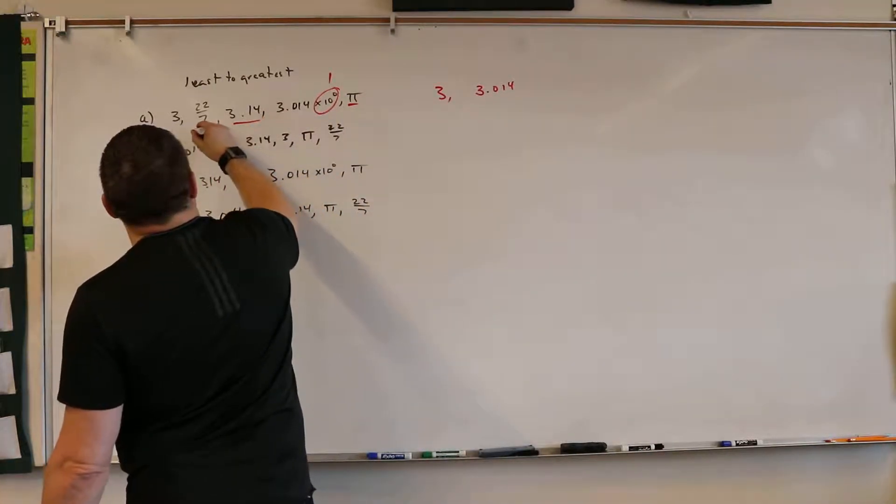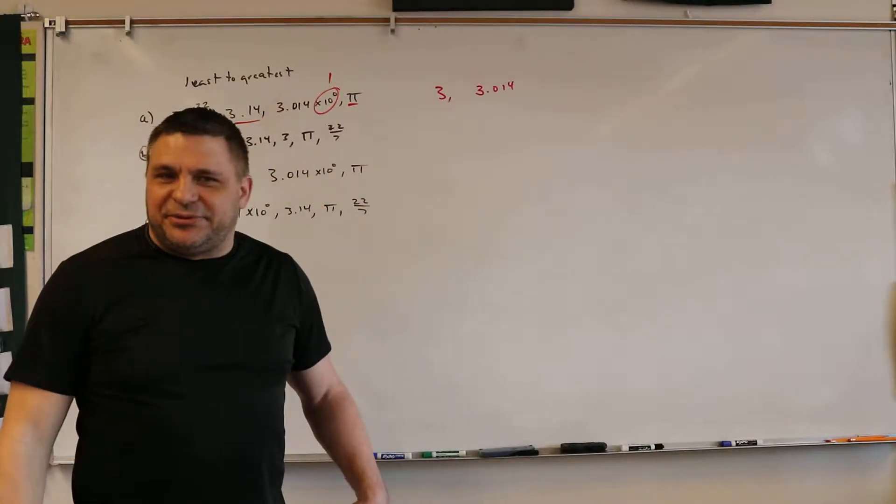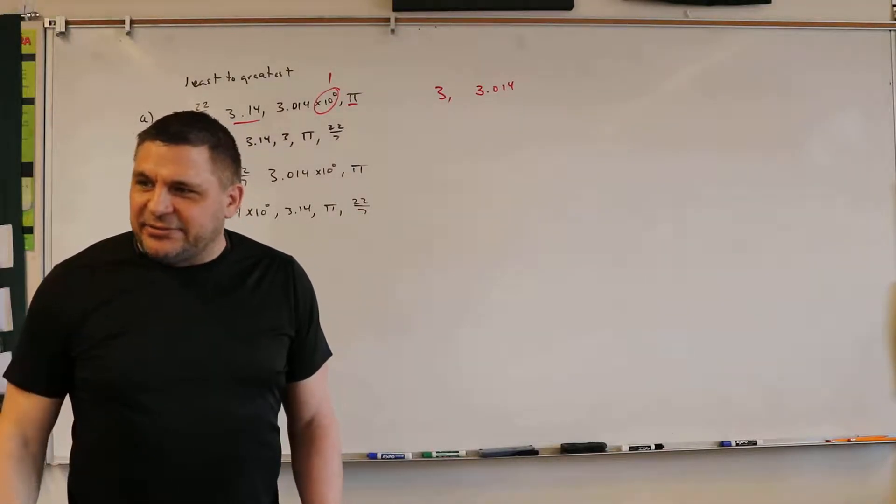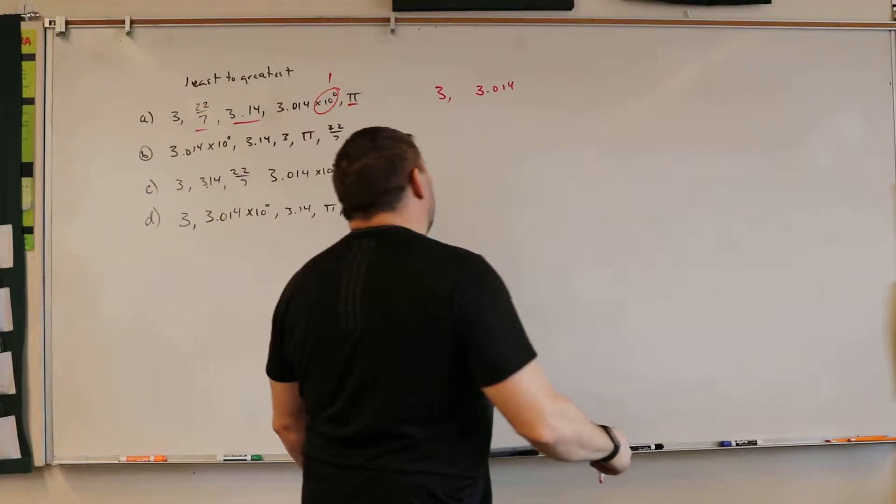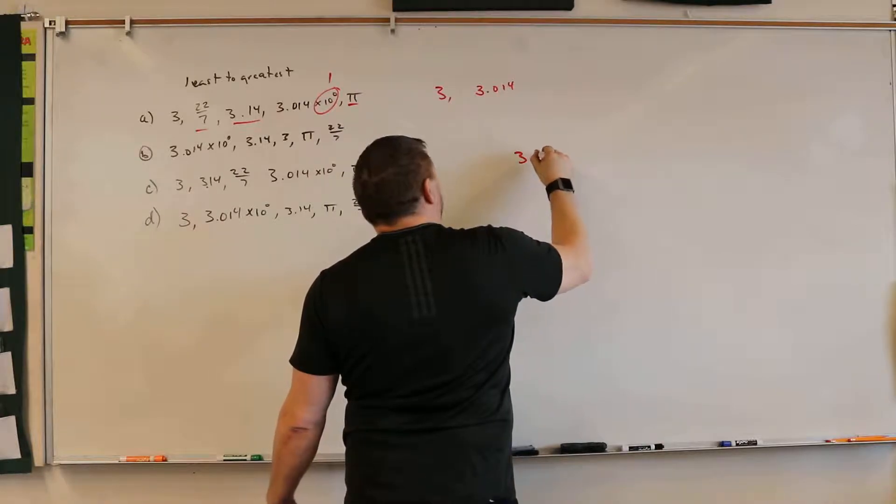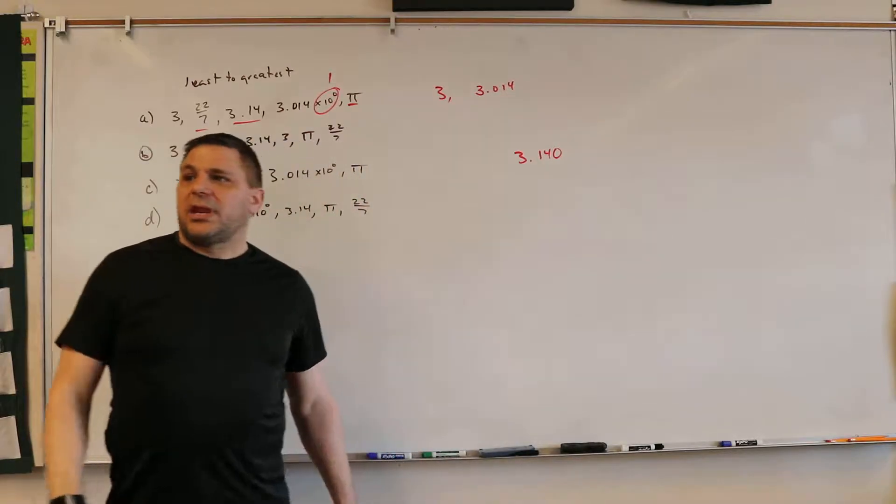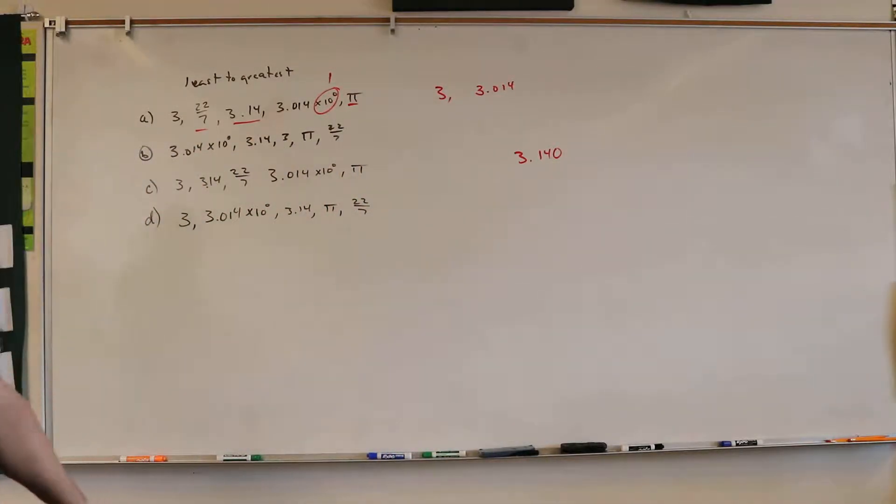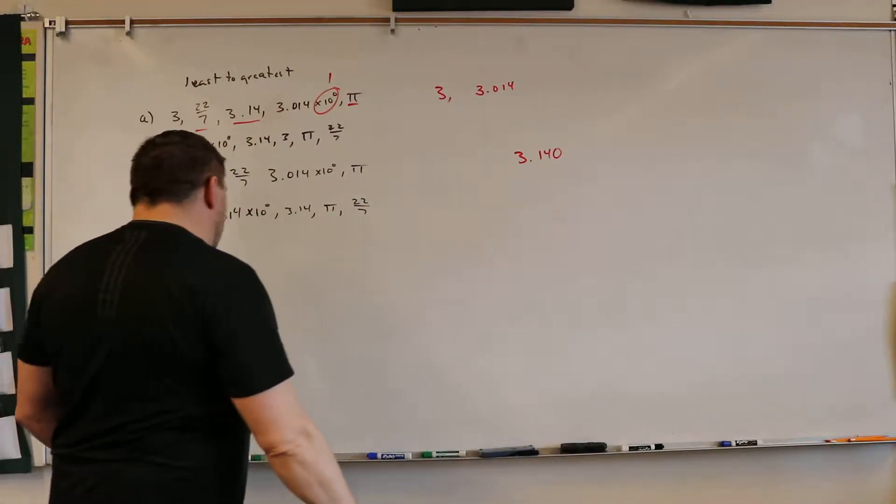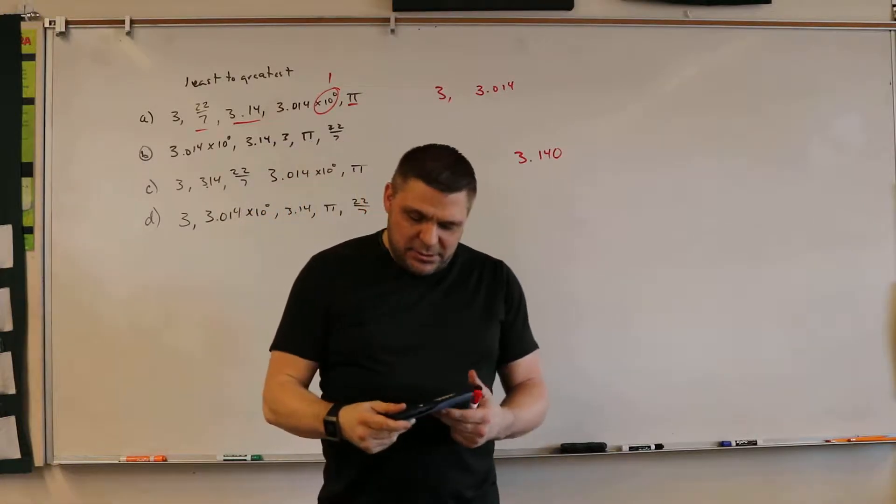We've got pi, 3.14, and 22 over 7. So we need to know, well, 3.14 is 3.14, right? Yeah. That doesn't change. So we'll call it 3.140. Okay? Now let's look at pi. How big is pi? 3.14. Well, a little bit bigger than that.